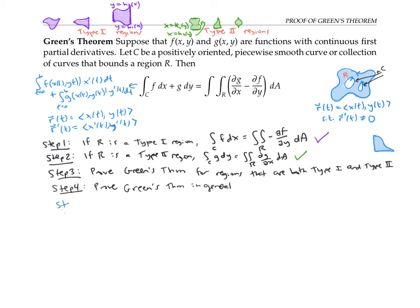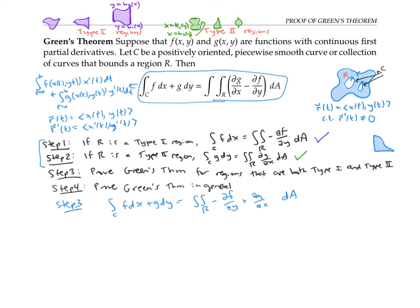Fortunately, step three is super easy. For a region that's both type one and type two, I have both step one and step two's results hold. So I know that the line integral of f dx plus g dy is just going to be the sum of these two double integrals, and that's exactly what Green's theorem states. So I've proved Green's theorem for regions that are both type one and type two.